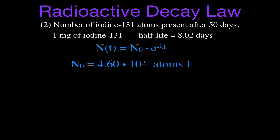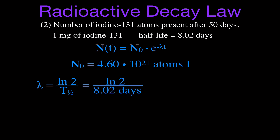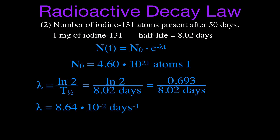Now we use the decay equation. We want to know how many atoms remain after 50 days, so we're solving for Nₜ. N₀ is 4.6×10²¹, which we just calculated. First we need the decay constant lambda, which is always calculated as the natural log of 2 divided by the half-life. The half-life is 8.02 days, so lambda = 0.693 / 8.02 = 8.64×10⁻² per day for iodine-131.